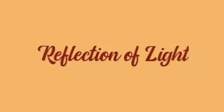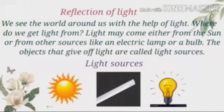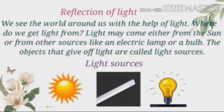Next, reflection of light. We see the world around us with the help of light. Light may come either from the sun or from other sources like an electrical lamp or a bulb. The objects that give off light are called light sources.